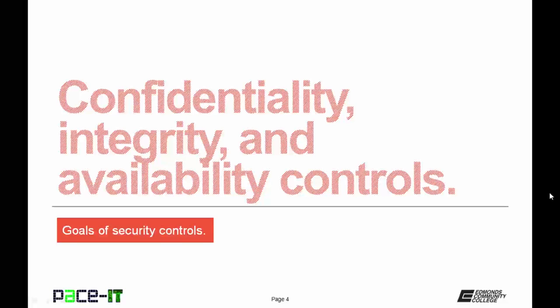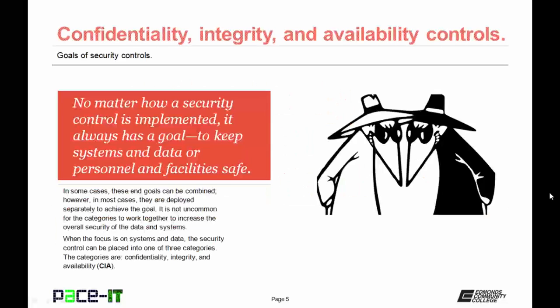I'm going to begin by talking about confidentiality, integrity, and availability controls. No matter how a security control is implemented, it always has a goal, and that goal is to keep systems and data or personnel and facilities safe. In some cases these end goals can be combined, however in most cases they are deployed separately. When the focus is on systems and data, the security control can be placed into one of three categories: confidentiality, integrity, and availability — commonly known as CIA.